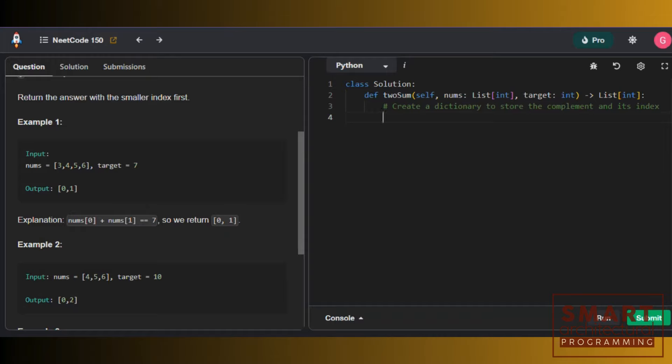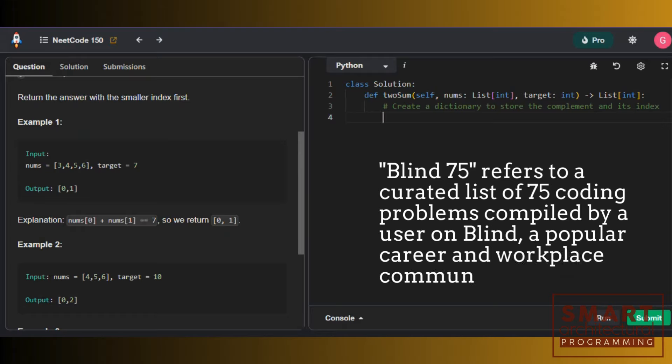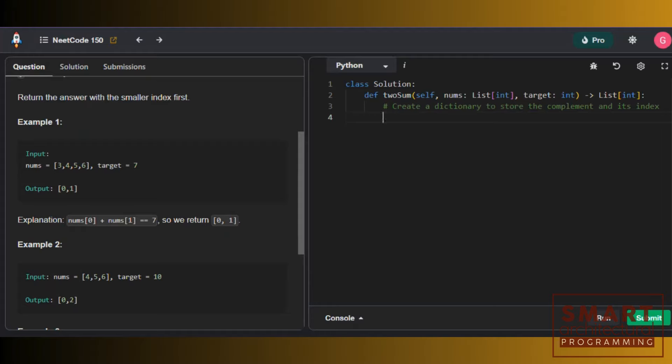Generally speaking, Blind 75 are common problems that come up in your coding interview exams when you're looking for a big five tech company-related job. And the third problem is the first problem in which things might get slightly trickier for you to solve.